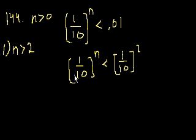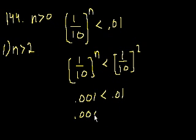If n is greater than 2, at n equals 2, you get 0.01. And then if n is equal to 3, they tell us it's an integer. So if n equals 3, they say n has to be at least 3, because it's a positive integer. So what's 1 tenth to the third power? It's 0.001. And that's definitely less than 0.01. What's 1 tenth to the fourth power? That's 0.0001. And that's definitely less than 0.01. So this statement alone is sufficient to answer the question.